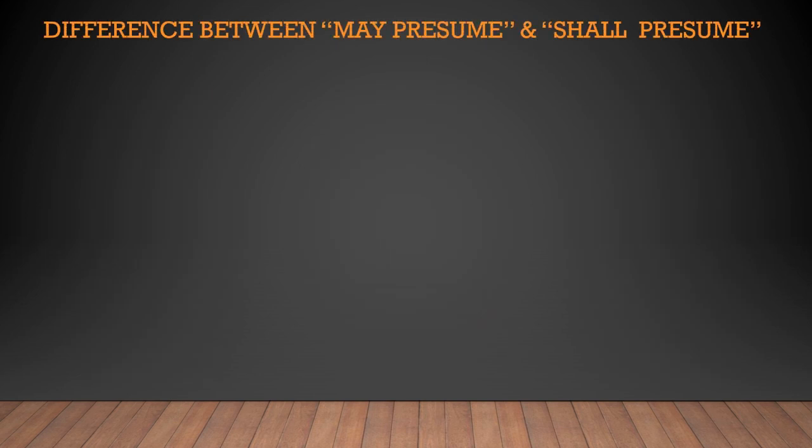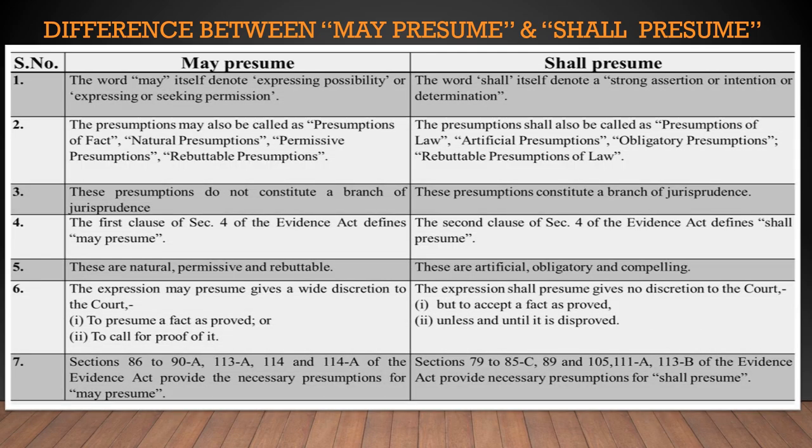Let's discuss the difference between may presume and shall presume in a clear manner. The word 'may' denotes expressing possibility or seeking permission, whereas 'shall' denotes a strong assertion, intention, or determination. The expression may presume may also be called presumption of fact, natural presumption, permissive presumption, and rebuttable presumption, whereas shall presume may also be called presumptions of law, artificial presumptions, obligatory presumptions, and rebuttable presumptions of law.